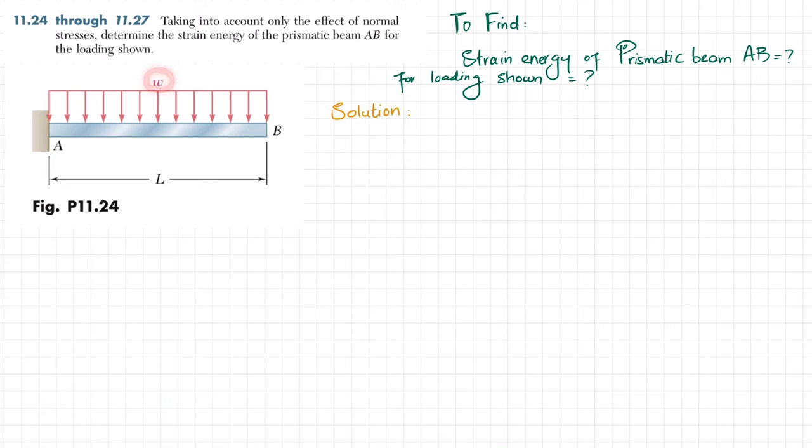The beam is acted upon by a uniformly distributed load and the length of beam is L. Due to these normal stresses, you have to find the strain energy of beam AB for this loading. Let's start with the solution.